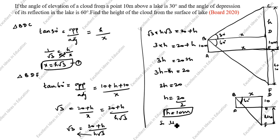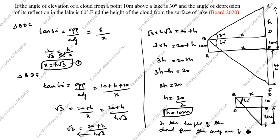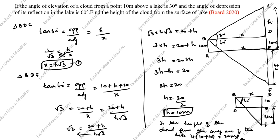So the height of the cloud from the surface of the lake: the surface of the lake is here, and already 10 meters is there below the observation point. We calculated H = 10. So 10 plus 10 equals 20 meters. The answer is 20 meters — from the surface of the lake to the cloud is 20 meters. Thanks for watching this video.